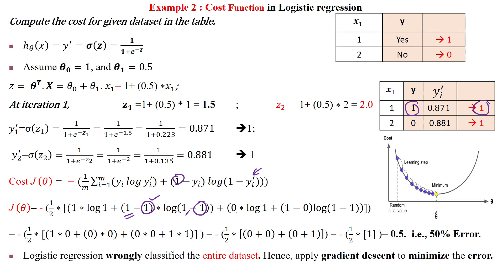For sample 2, the actual output is y₂=0 and predicted output is ŷ₂=0.881. Substituting: y₂ log(ŷ₂) + (1-y₂)log(1-ŷ₂).